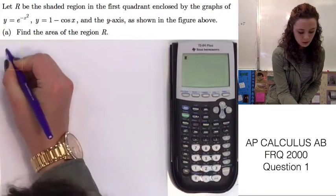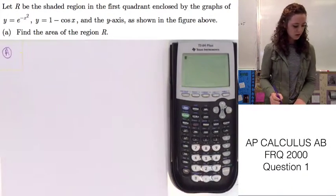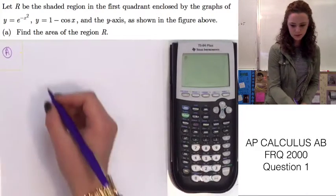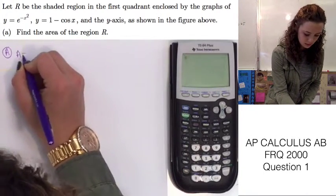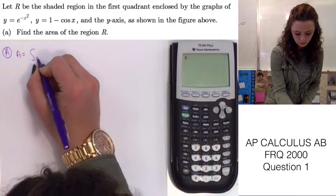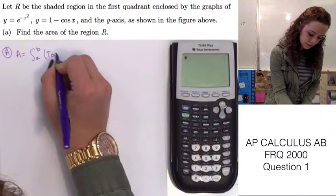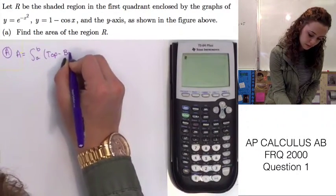We know that when you're finding the area, the function for finding that is the integral from A to B of the top function minus the bottom function.